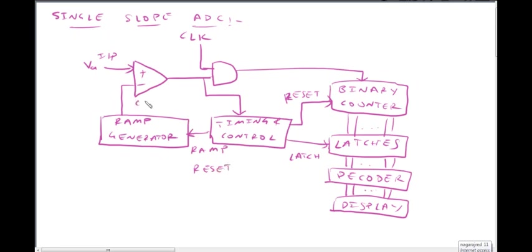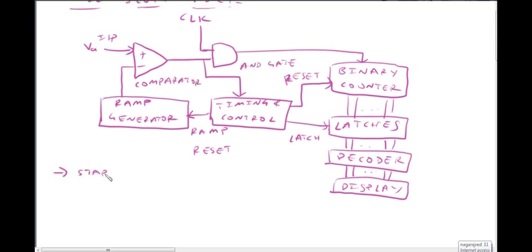Operational reset signal goes to the Comparator. The AND gate — start signal — is sent to the counter. It starts counting and resets to all ones.